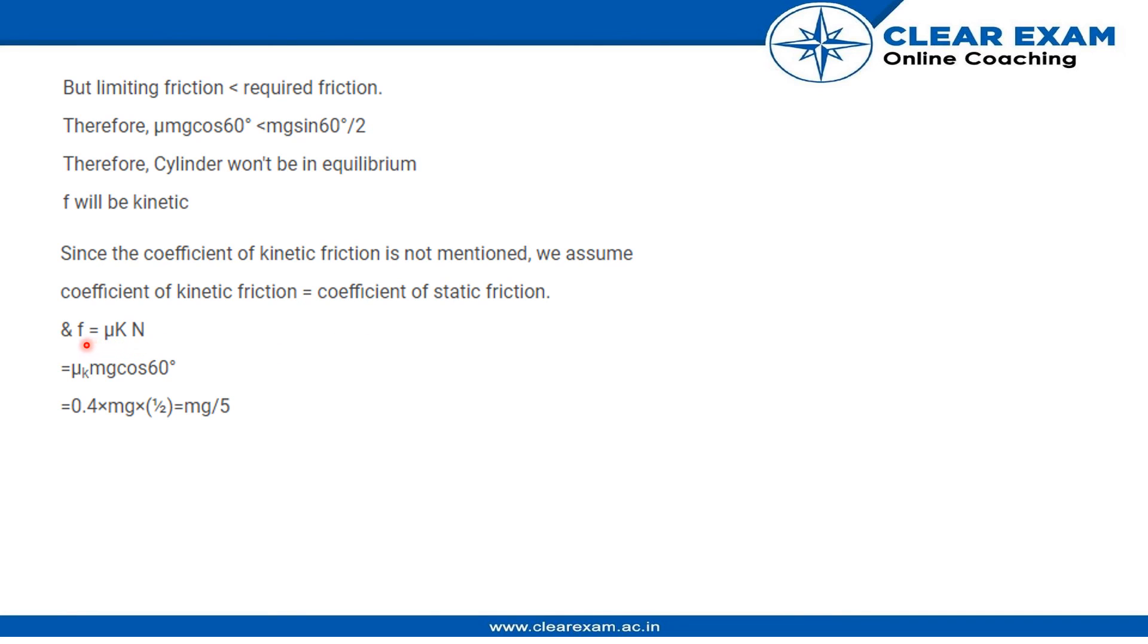So therefore we have frictional force to be equal to μk × N, which is equal to μ mg cos 60°, which equals 0.4 × mg × 1/2, which is equal to mg by 5.